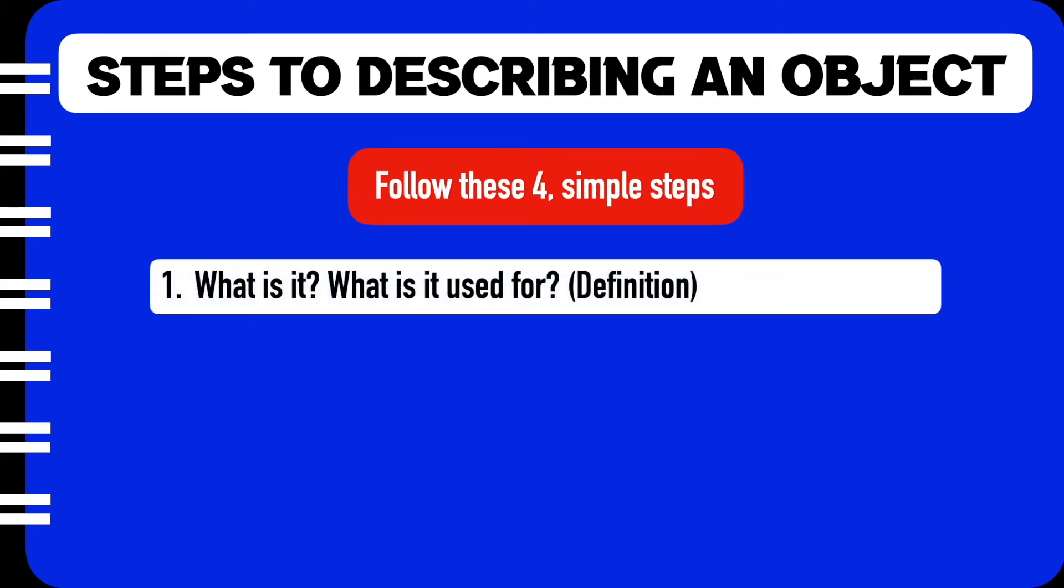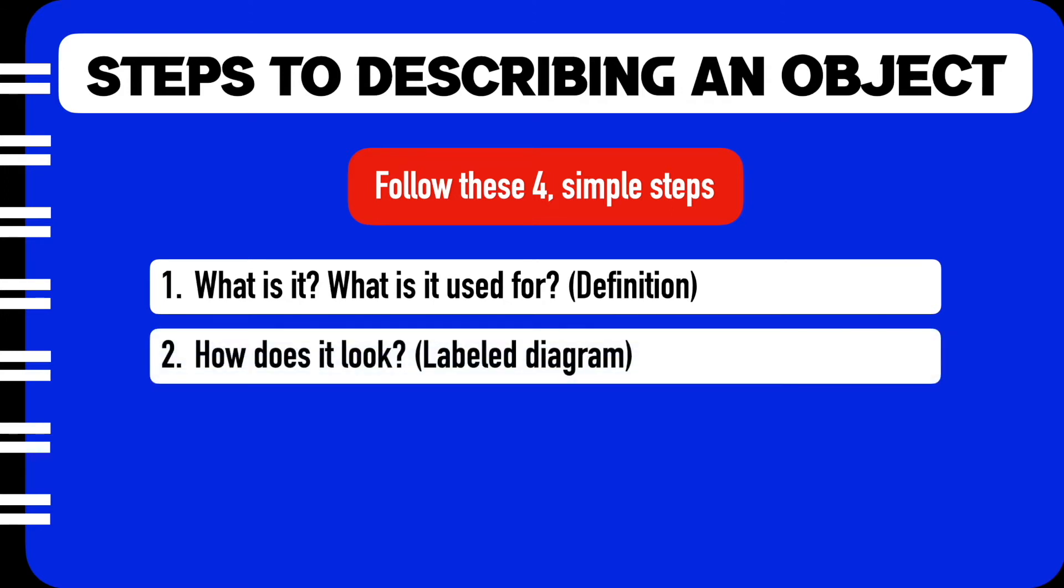The first step is to tell the reader what is the object and what is it used for. And this can be done simply by giving the definition of the object.